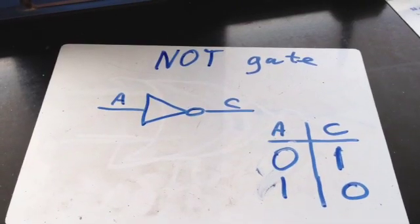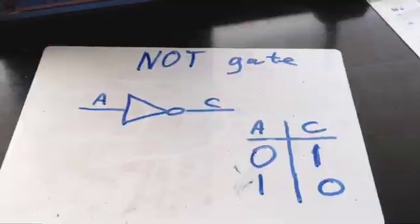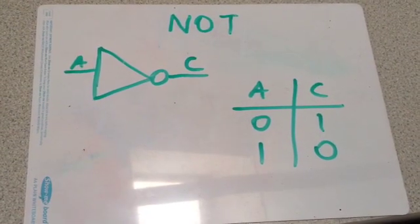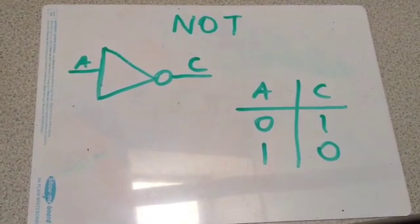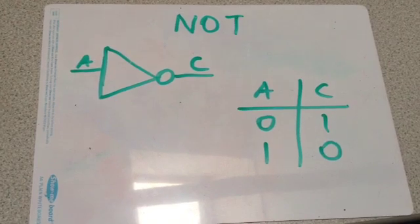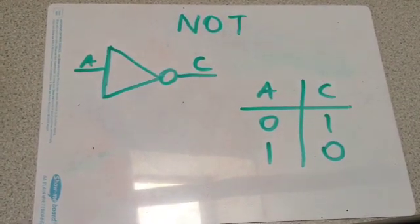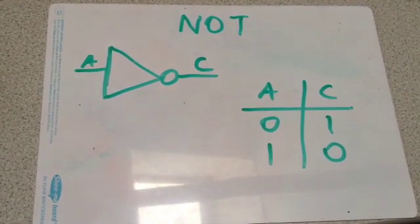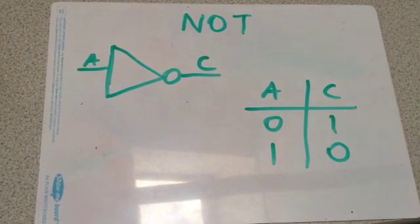The second part of the NOR gate is the NOT gate. This is a NOT gate. If the input is A and the output is C in this example, when A is false, C will be true. And when A is true, C will be false.